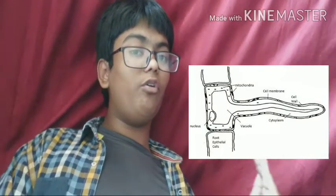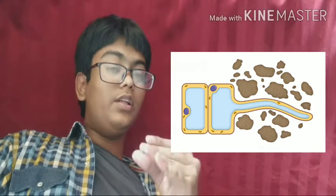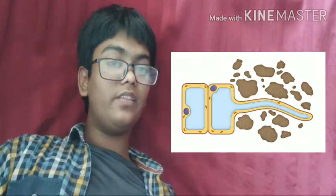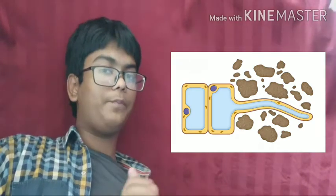Why only a root hair? The root hair cell has a completely permeable cell wall, allowing all substances in, while the inner cell membrane is semi-permeable, sending only water or certain substances in. The large number of root hairs gives a large surface area, and greater surface area means greater absorption. Also, in the root hair cell, the concentration of solutes and minerals is higher compared to the surrounding soil, making it ideal for water absorption.